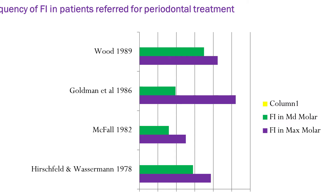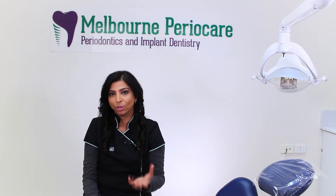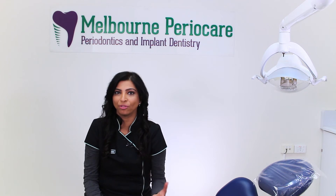Studies have shown that up to 40 to 50 percent of upper molars and up to 30 to 35 percent of lower molars are involved in the furcation zone. And furcation involvement is always a very big challenge to treat. Before we go ahead with what causes it and what are the contributing factors, it's important to understand how we are classifying furcation involvement.